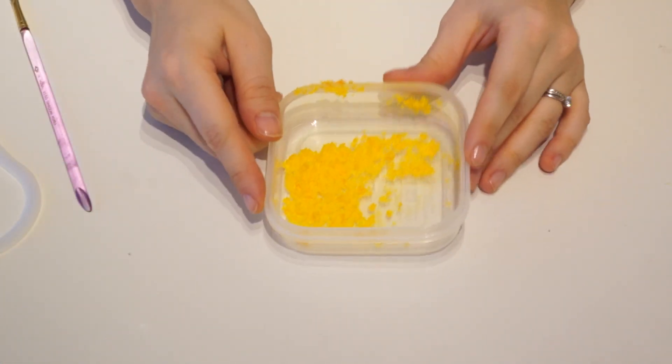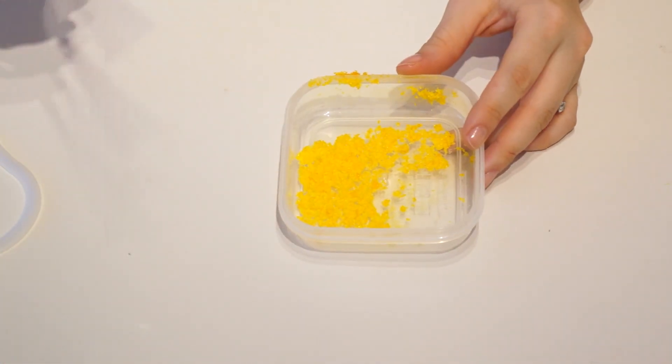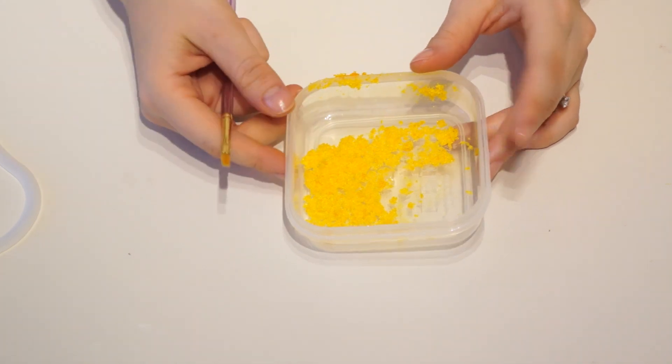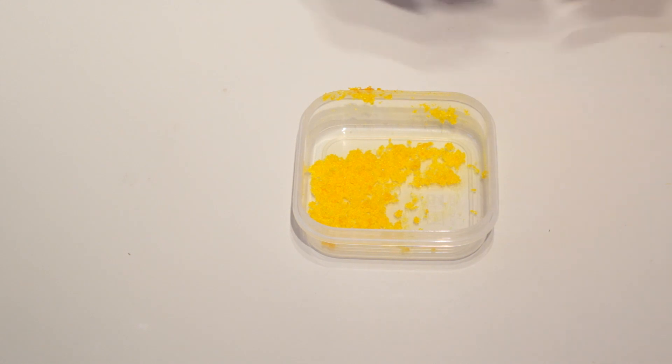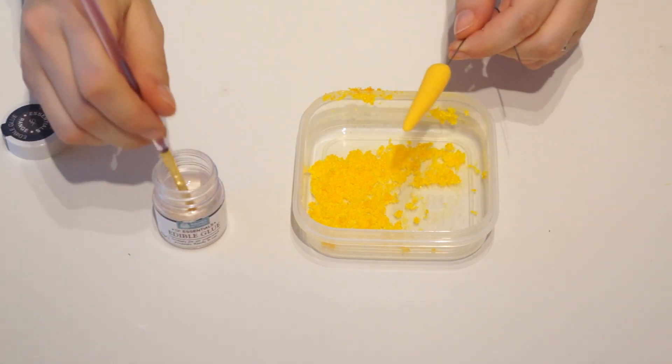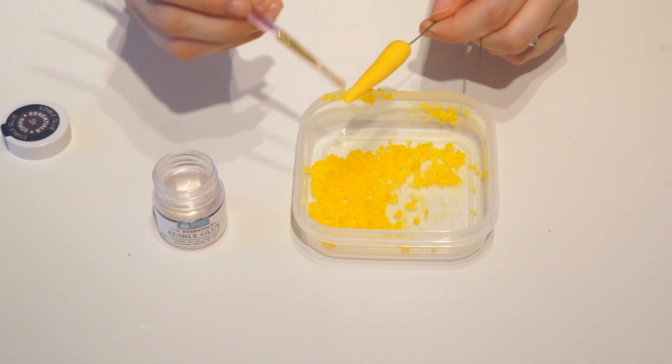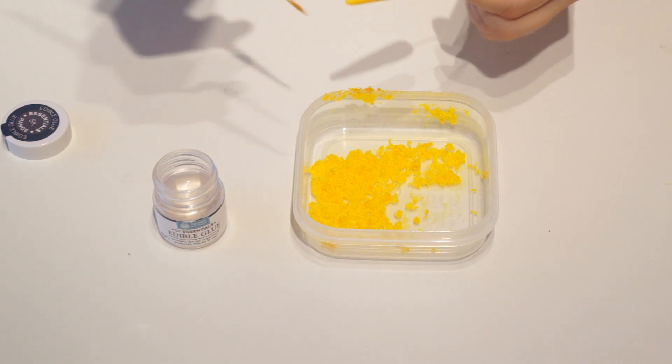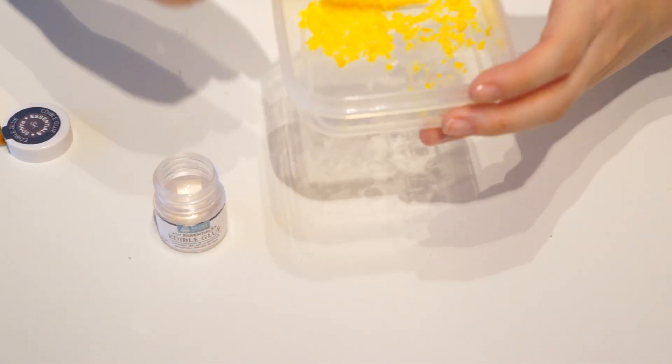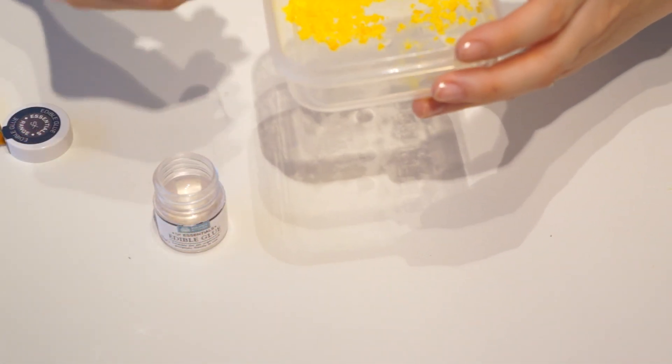What I've done is colored the caster sugar and the granulated sugar with some yellow gel paste. We're going to put that on so it looks like some pollen on the middle of the flower. I'm going to put some edible glue on the flower, leaving the bottom, then dip that in, picking up the sugar.